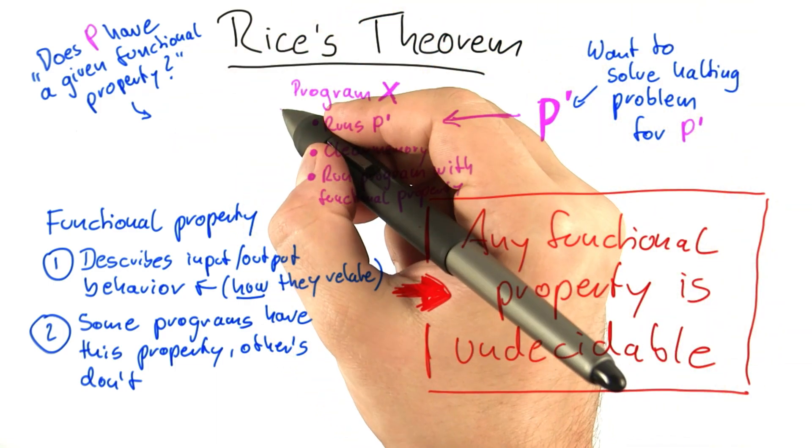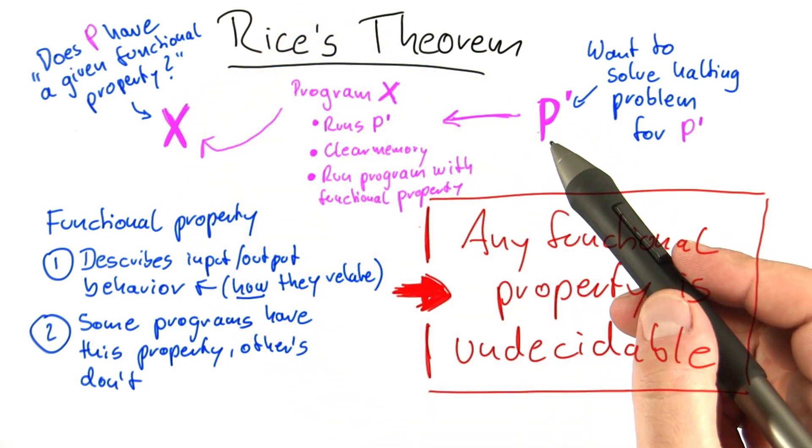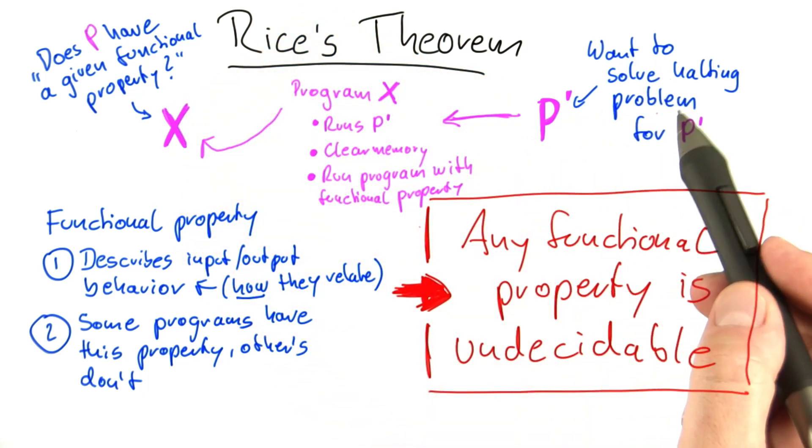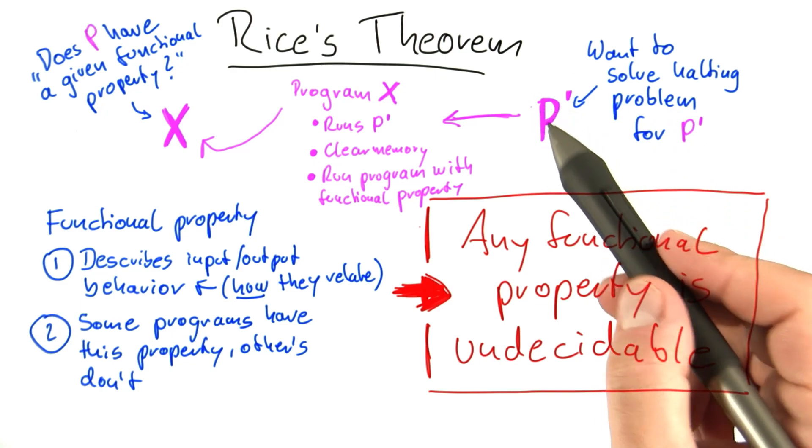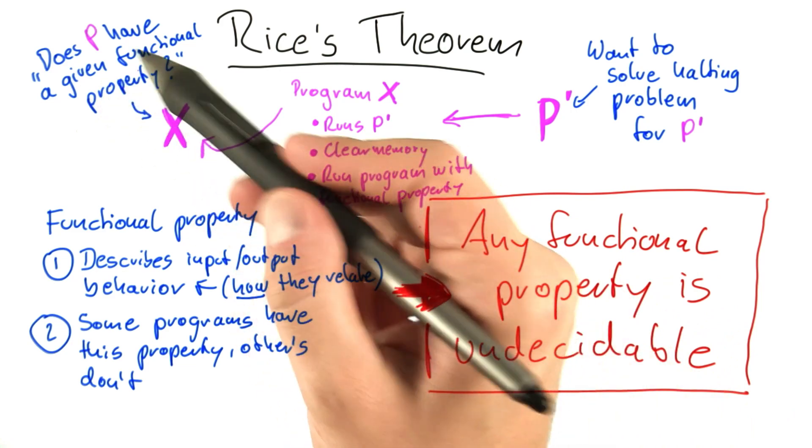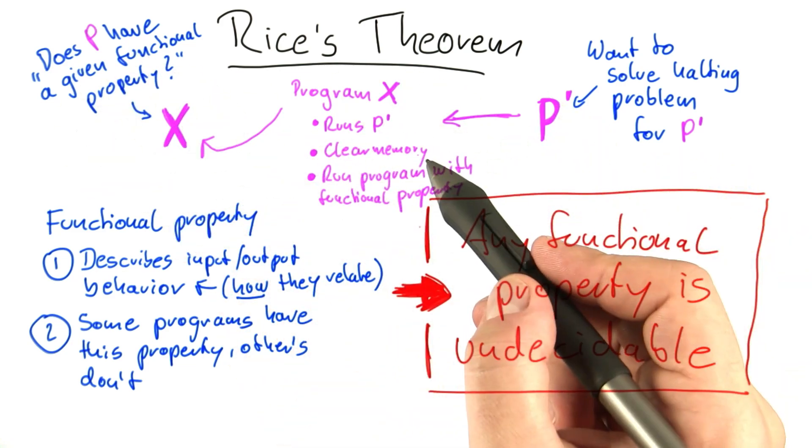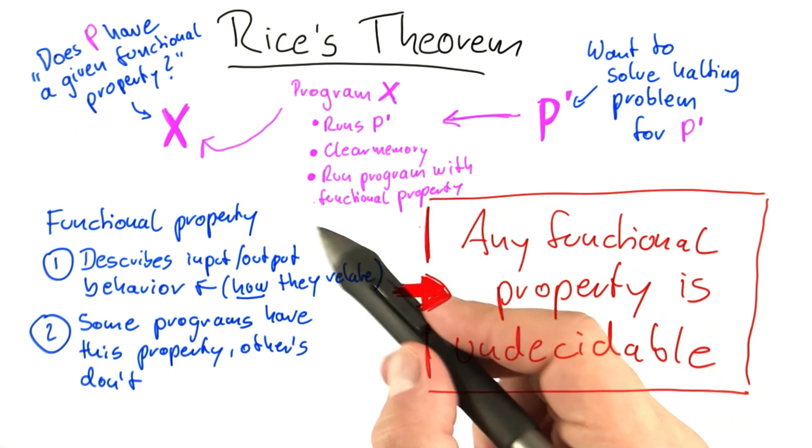And what we then do is we take this program x and feed it into this algorithm here. What you can see now is the following. If p prime here, the problem for which we want to solve the halting problem, runs smoothly and terminates, then this program x will have the functional property that we can decide. Because it runs this algorithm here, then it clears the memory, and then it runs a program with that functional property.